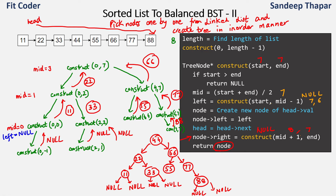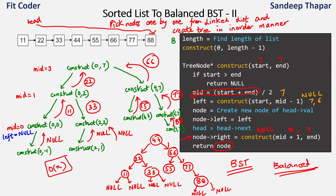This is the BST we created from the sorted linked list, and it is also balanced. We traversed the linked list starting from the head and constructed the tree in inorder manner. The tree is balanced because each time we compute the midpoint as (start + end) / 2, ensuring half the nodes come on the left and half on the right, with a maximum height difference of 1 between left and right subtrees. The time complexity is O(n) since we traverse the list only once, and the space complexity is O(log n), which is the height of the tree and the maximum depth of the recursion.